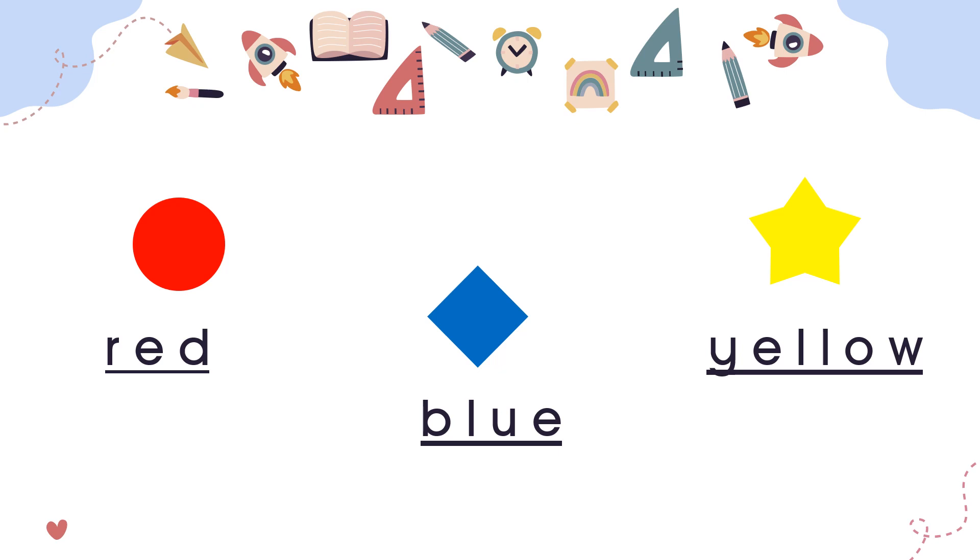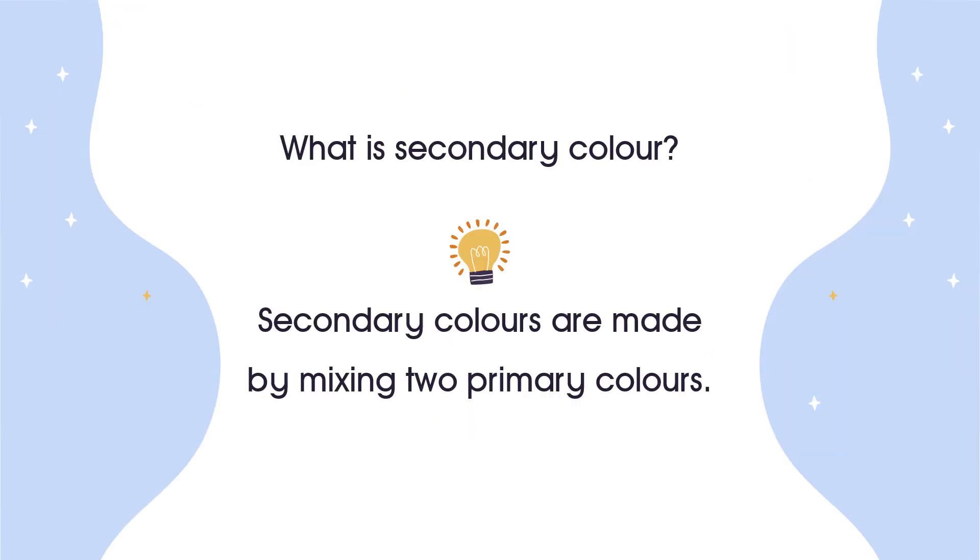These three colors are primary colors. So remember, primary colors are red, blue, and yellow. Now let's move on.